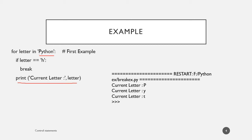The next character is T. T is not equal to H, so it will be displayed. In the next iteration, there are more characters, so iteration continues, but letter is assigned the value H. When letter equals H, we are asking the Python interpreter to break. So it will break from the current loop and the program execution in this example gets stopped.